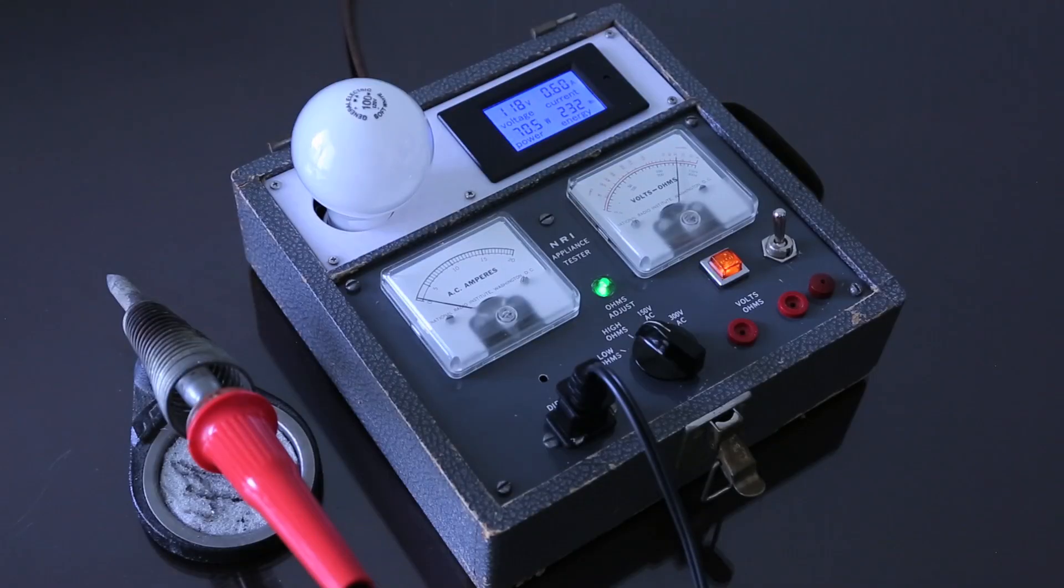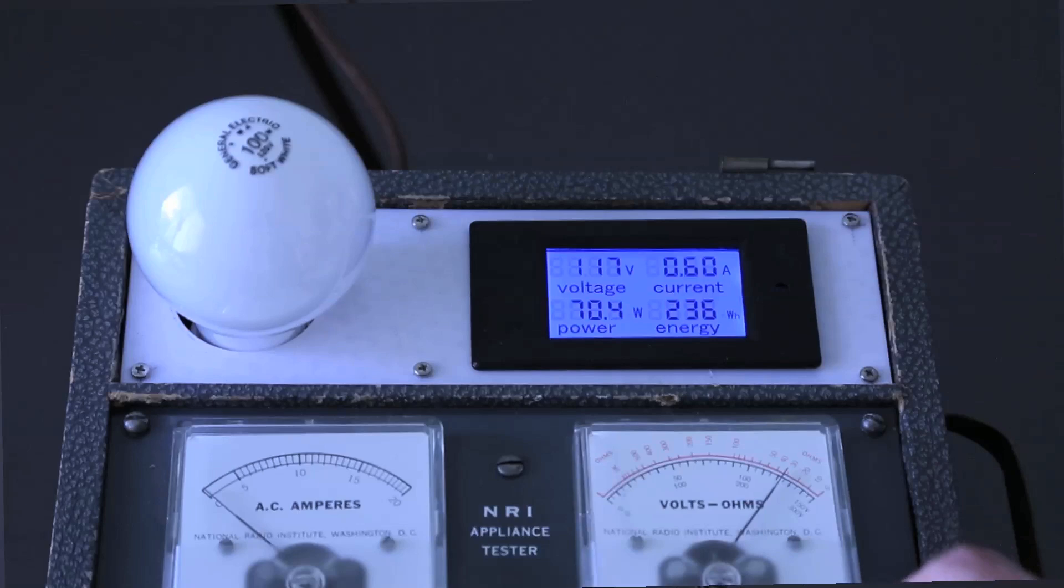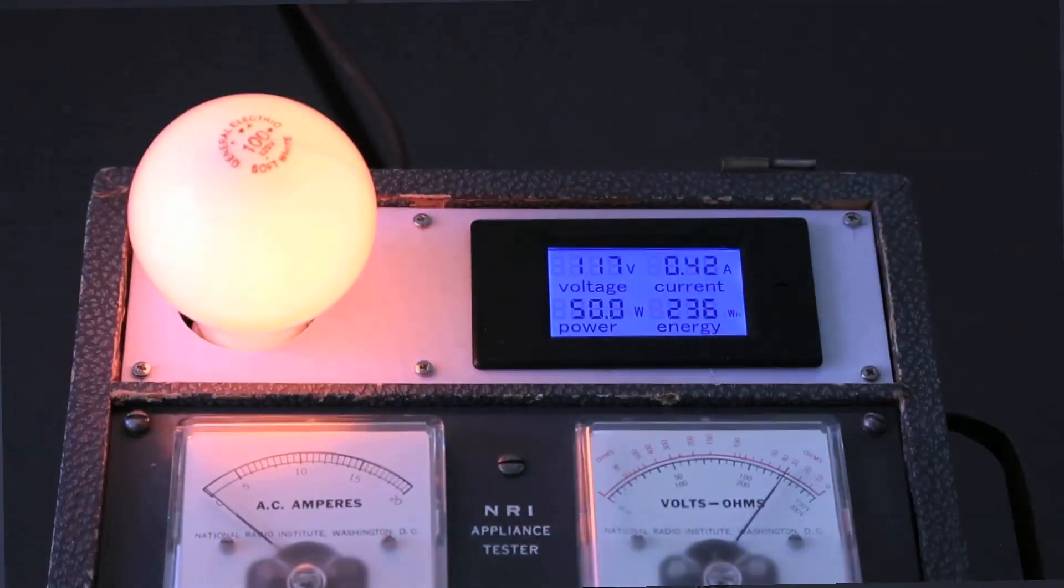The iron should heat to full operating temperature in just a few seconds. When finished with the iron for a while, place it back on its stand and throw the switch back to the dim position without fear of overheating.